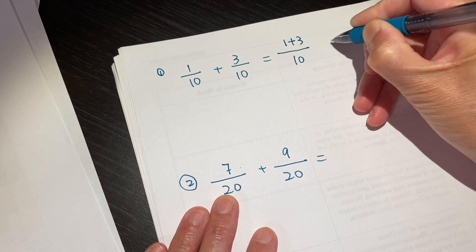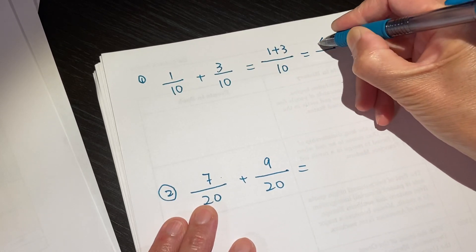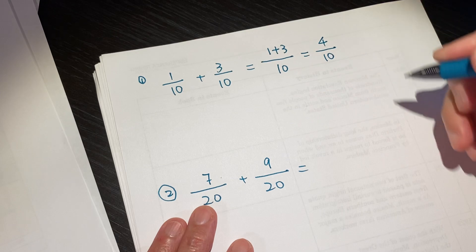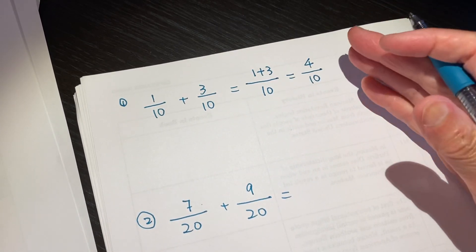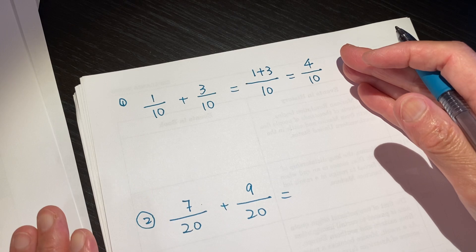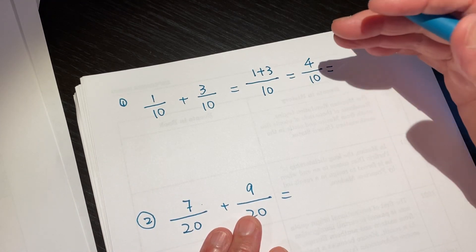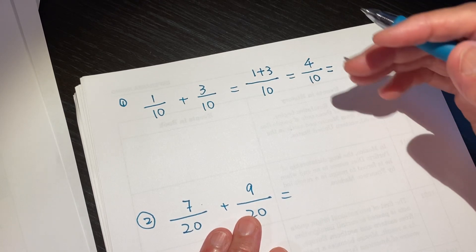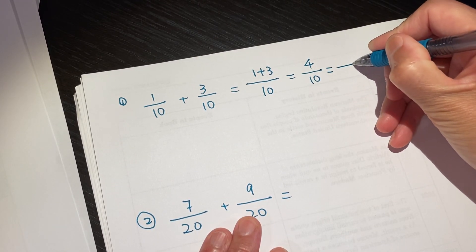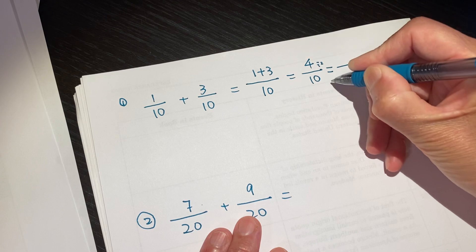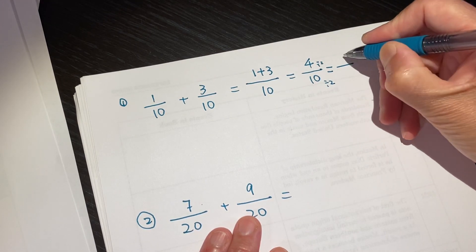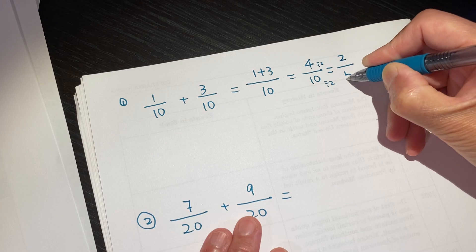1 plus 3, which is 4 over 10. And that is the right answer. But we are better than right, right? So we can make it into the simplest form, both divided by 2, it becomes 2 over 5.